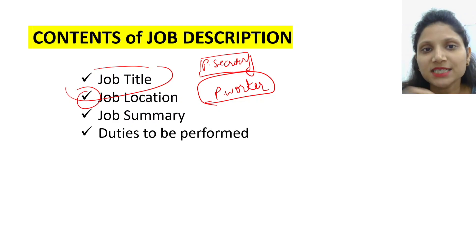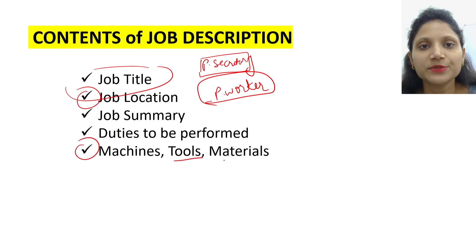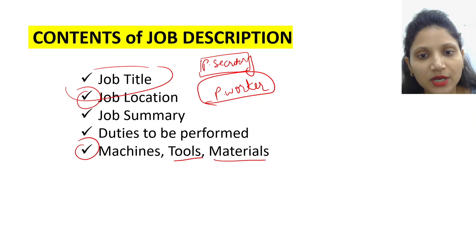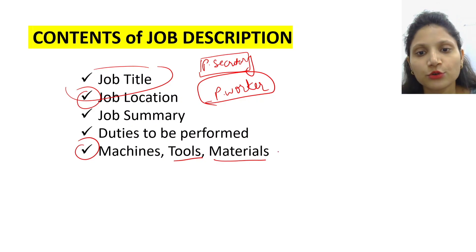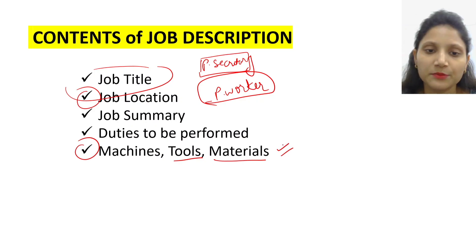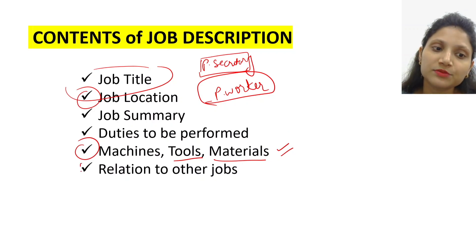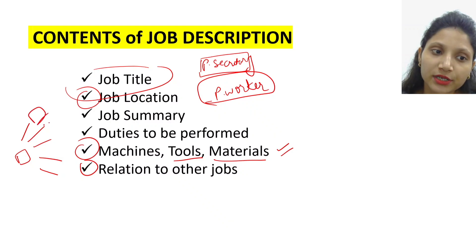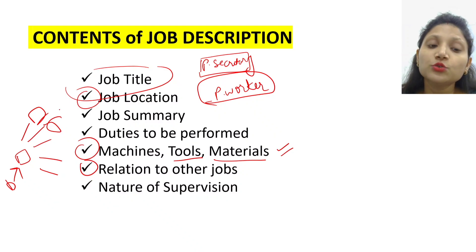Uske baad duties — ek ek duty kya kya rahegi, usko mention karo. Iske baad kya kya machines use karni hain, kya tools use karne hain, taaki job seeker ko pata lag jaye ki agar aapko woh tools chalane aate hain ya nahi. Jo material ke saath aap kaam karne ko taiyar ho — jaise call, lead, ya kuch aisi materials jo us job me use ho rahi hon jin ke saath aap comfortable nahi ho — to is type ki saari information job description me dee di jayegi. Relation to other jobs — kaisi woh ek job relate karayi jaati hai baaki other jobs se organization ke andar, kis ko woh report karayga, kone usse report karayga — in saare questions ke answers isme dee diye jate hain.